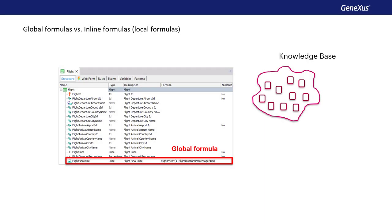A global formula, also known as a formula attribute, is a calculation assigned to an attribute in a transaction structure. They're called global because when defining the calculation in an attribute, its definition remains at the knowledge base level, and therefore all objects will have access to the attribute with that calculation. Once we associate the calculation with an attribute, it will not be stored as a field of a table in the database, and for this reason, they're also called virtual attributes.